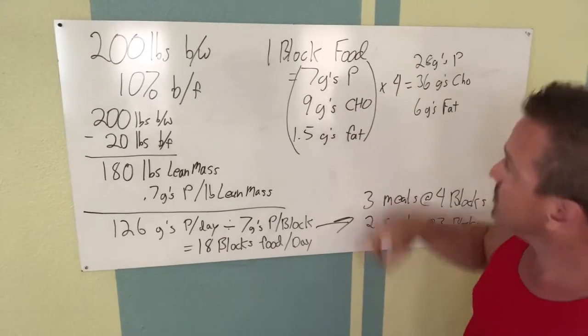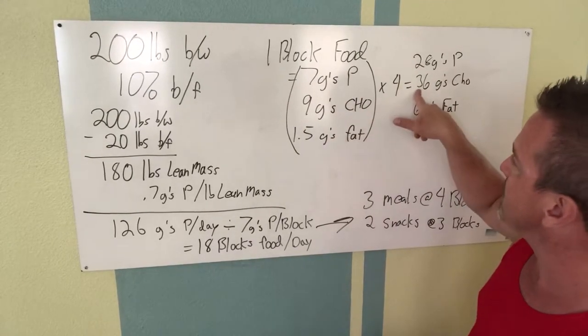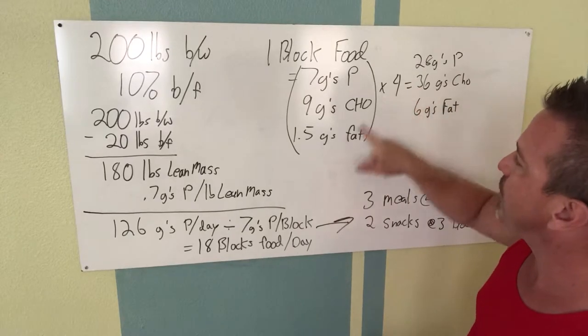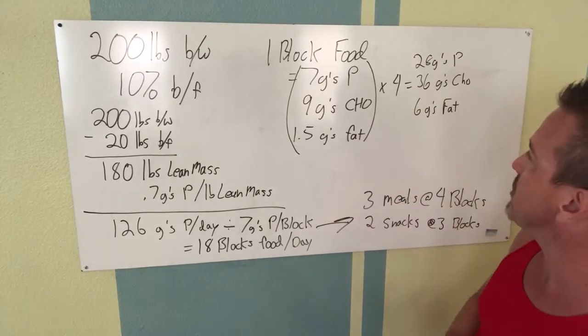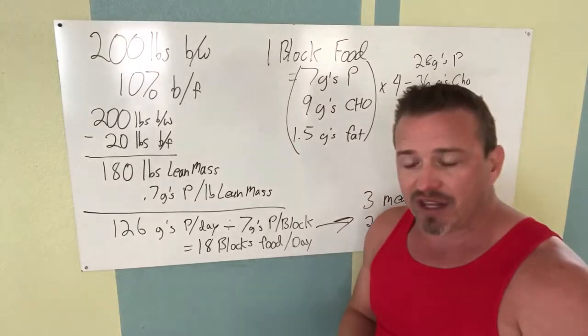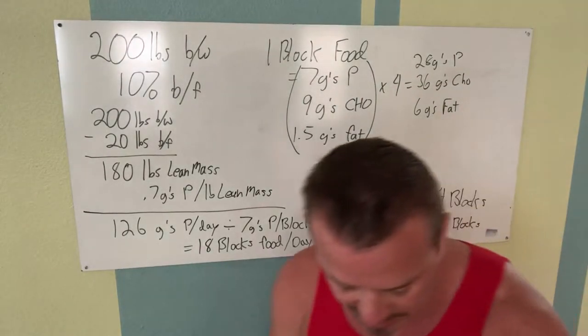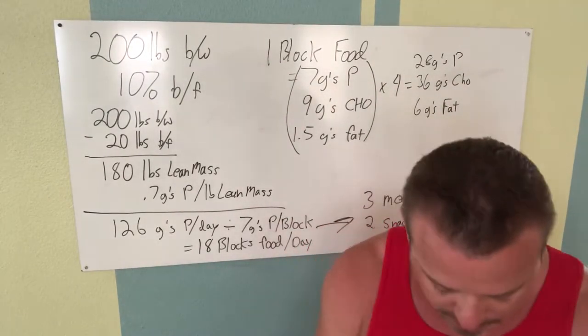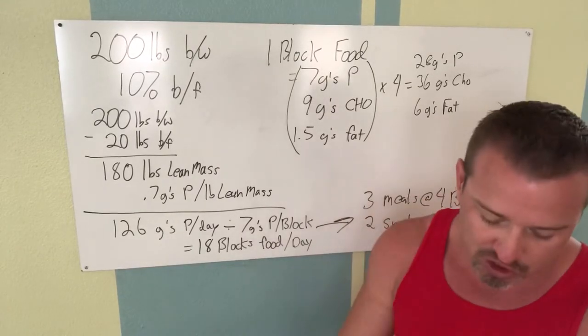Four times the seven would be 28 grams of protein, four times nine is going to be 36 grams of carbohydrate, and then four times one and a half is going to come to six grams of fat per meal. Now to give you an idea as to what that's going to look like.